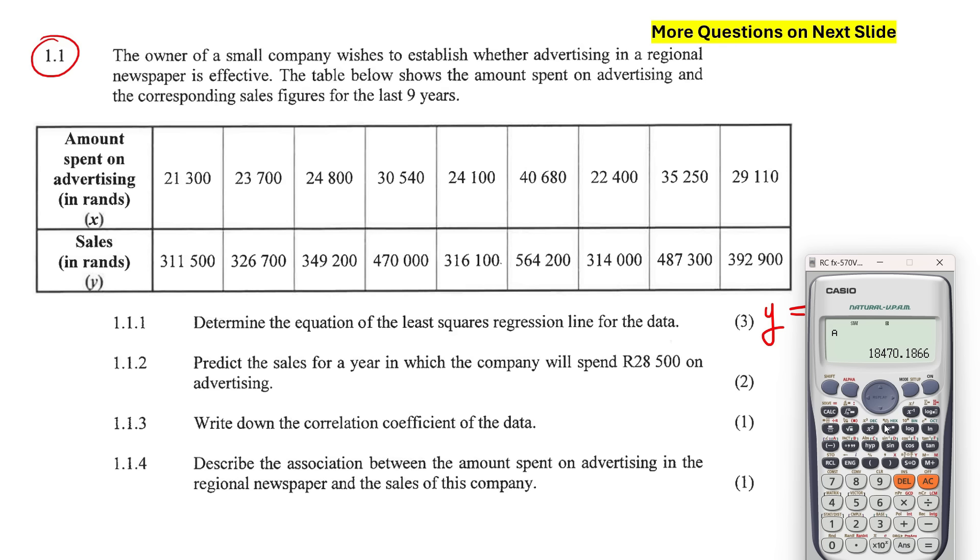I entered all the values. I then pressed the AC button. Then I'm going to go to shift, and then I'm going to go to this number one over here. If it was grade 11, once again, you would go to var. But now we're going to five, which stands for regression, and we're busy finding a regression line. The important parameters we need for that formula - remember, I said the formula is y equals to a plus bx. So we need a and b. If you look at question 1.1.3, they're asking us for a correlation coefficient. That is r. So we might as well go get all three parameters.